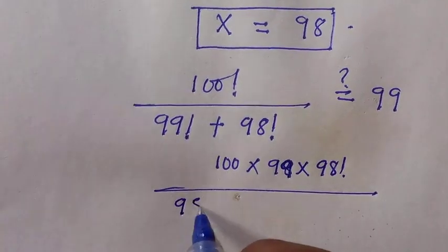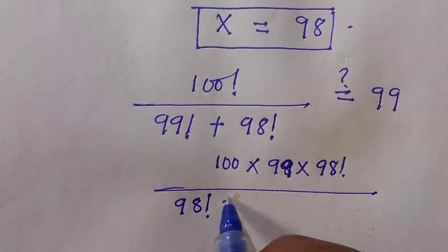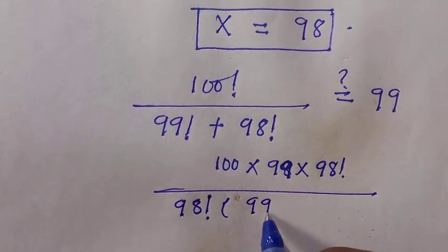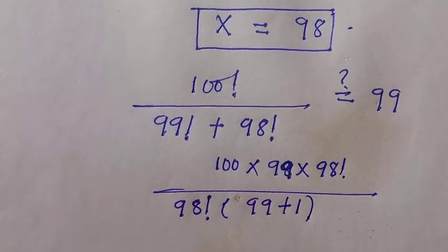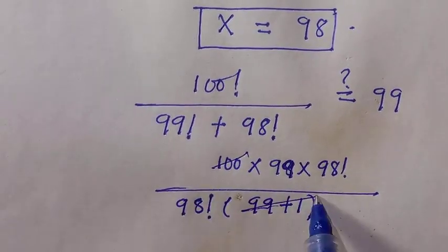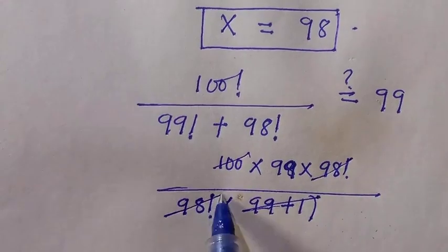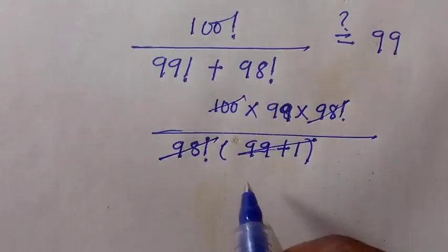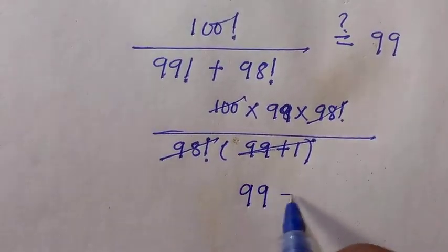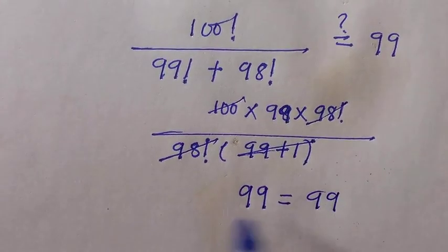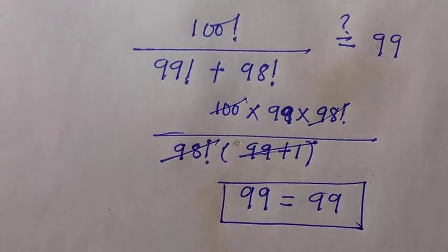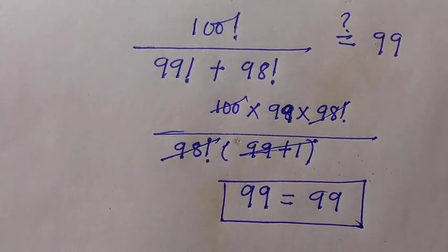We take it out and here becomes 99 plus 1. 100 multiplied by 98 factorial. Therefore, 99 equals 99 as the left-hand side equals the right-hand side when x equals 98.